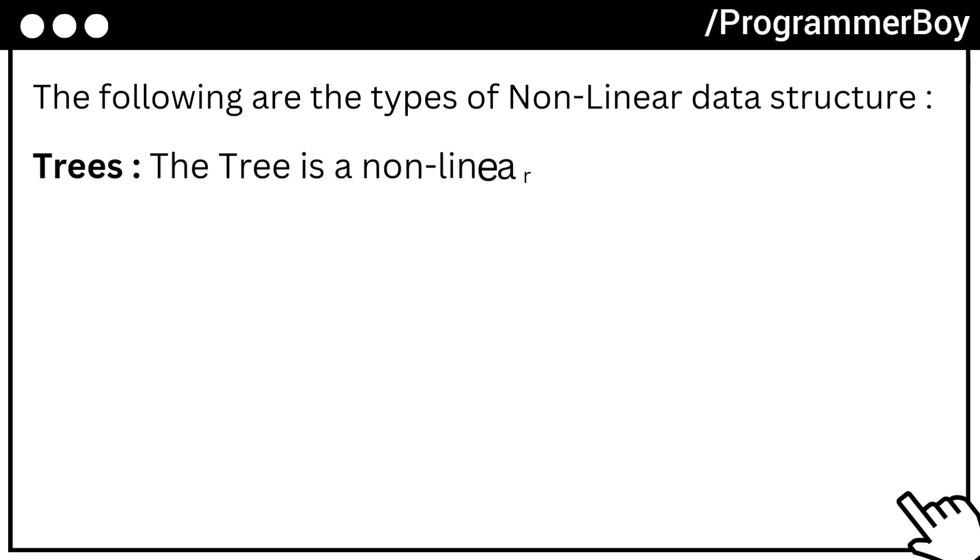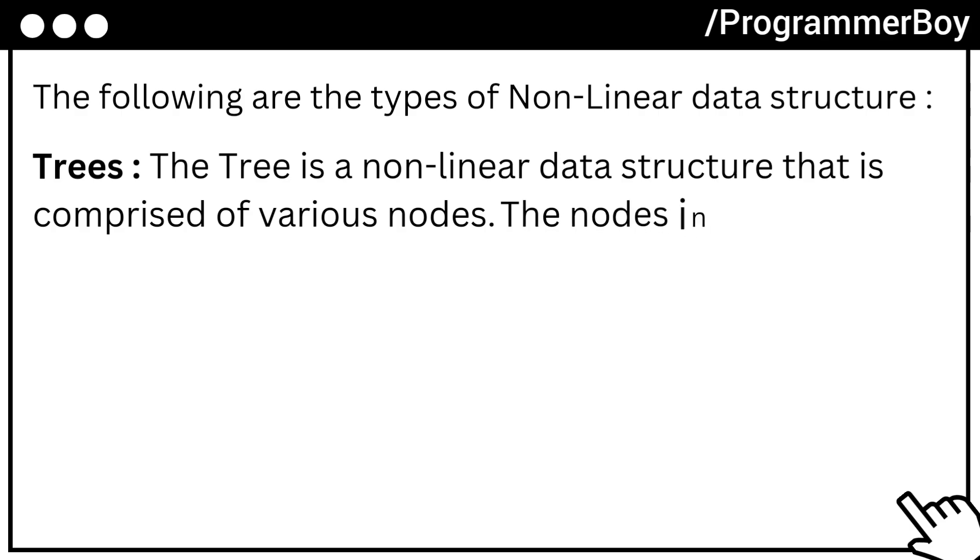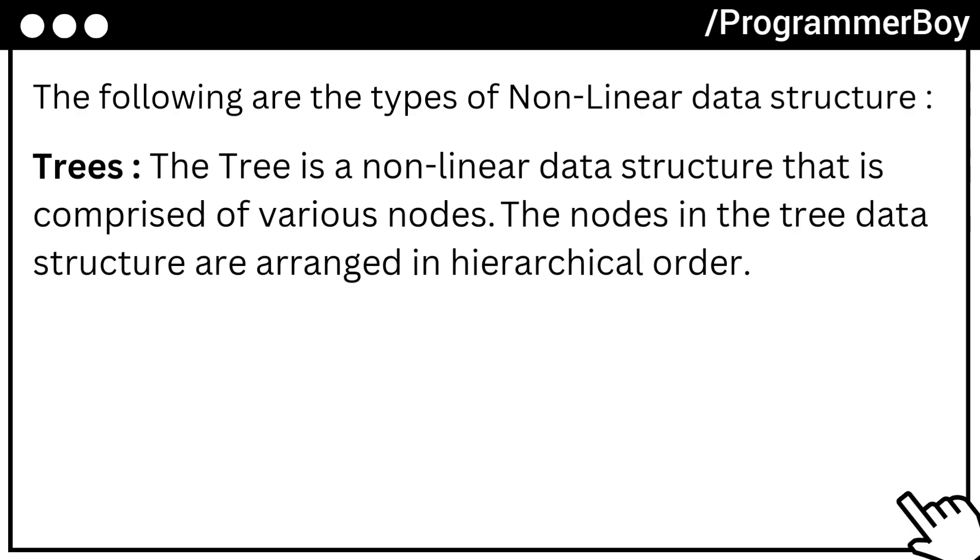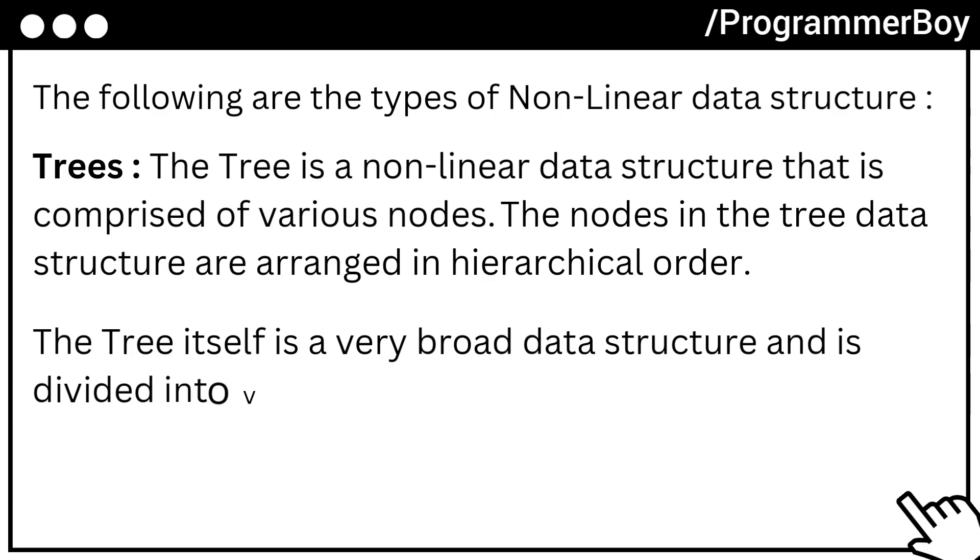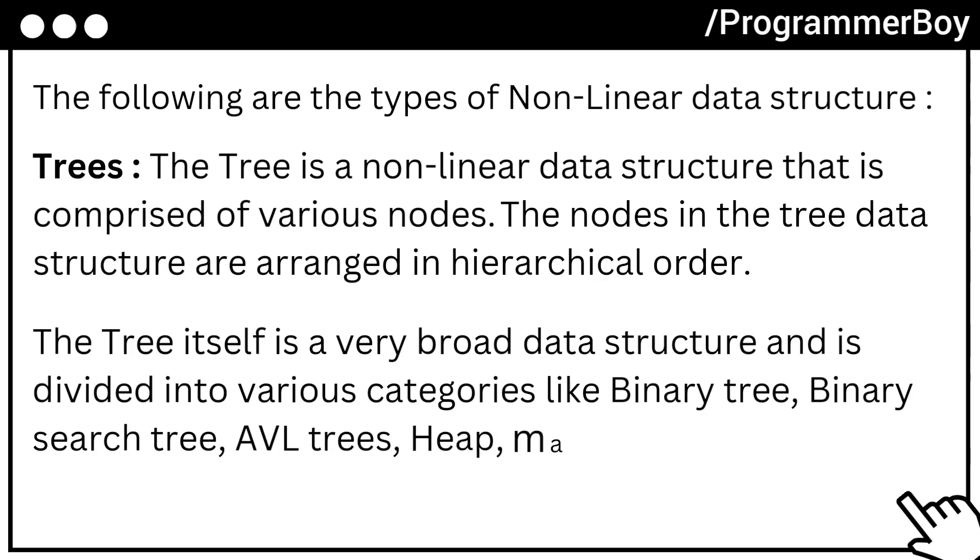Trees: The tree is a non-linear data structure that is comprised of various nodes. The nodes in the tree data structure are arranged in hierarchical order. The tree itself is a very broad data structure and is divided into various categories like binary tree, binary search tree, AVL trees, heap, max heap, min heap, etc.